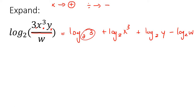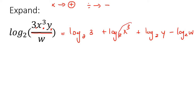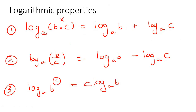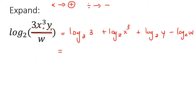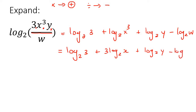If you look at log₂(3), log₂(y), and log₂(w), they all have two parts: the base and the normal number. But log₂(x³) has three parts: the base, the number, and an exponent. When it has that third part, going back to rule number 3, the exponent must end up in front. So we get log₂(3) plus 3·log₂(x) plus log₂(y) minus log₂(w).